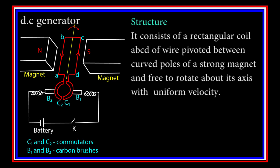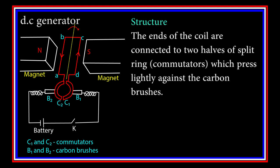pivoted between the curved poles of a strong magnet, and free to rotate about its axis with uniform velocity. The ends of the coil are connected to two halves of slip rings, or commutators, which press slightly against the carbon brushes.